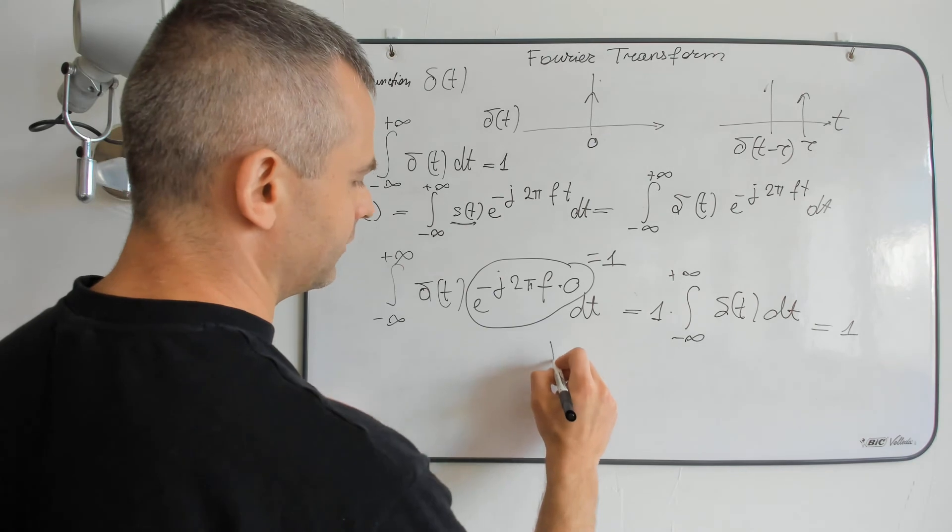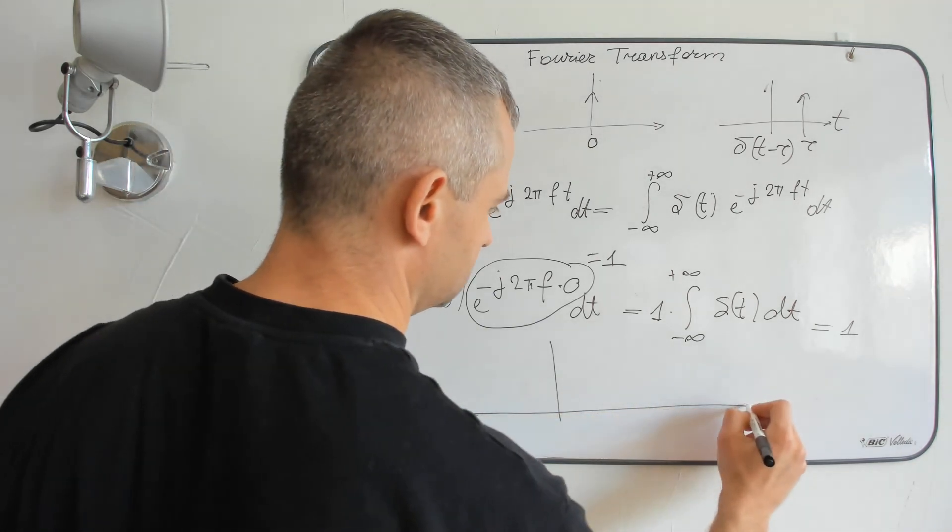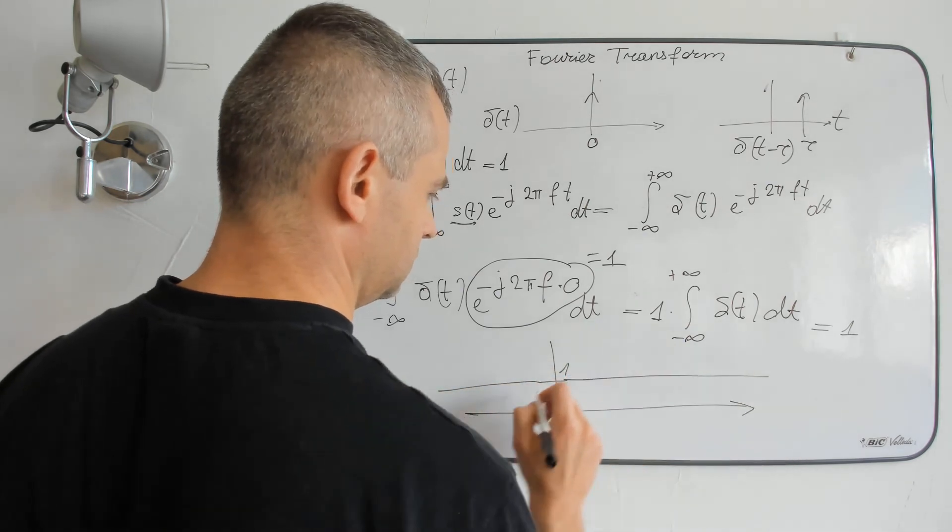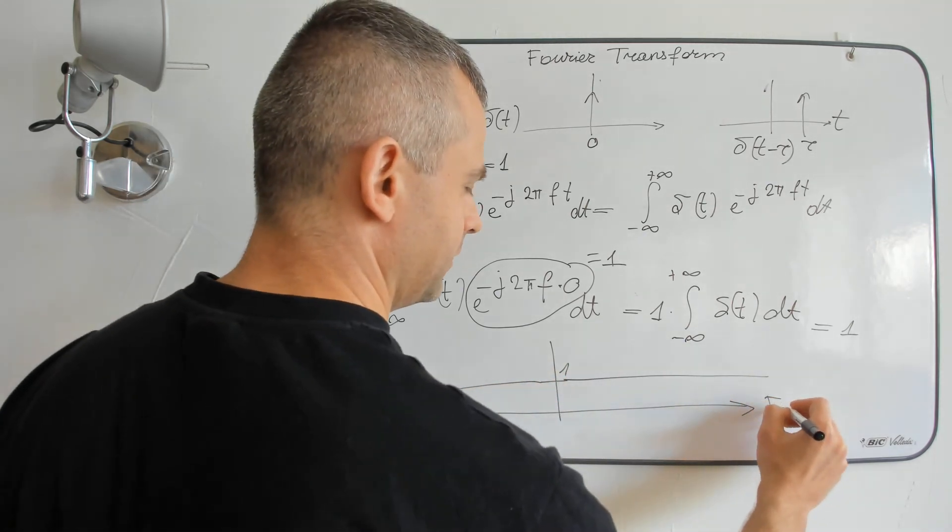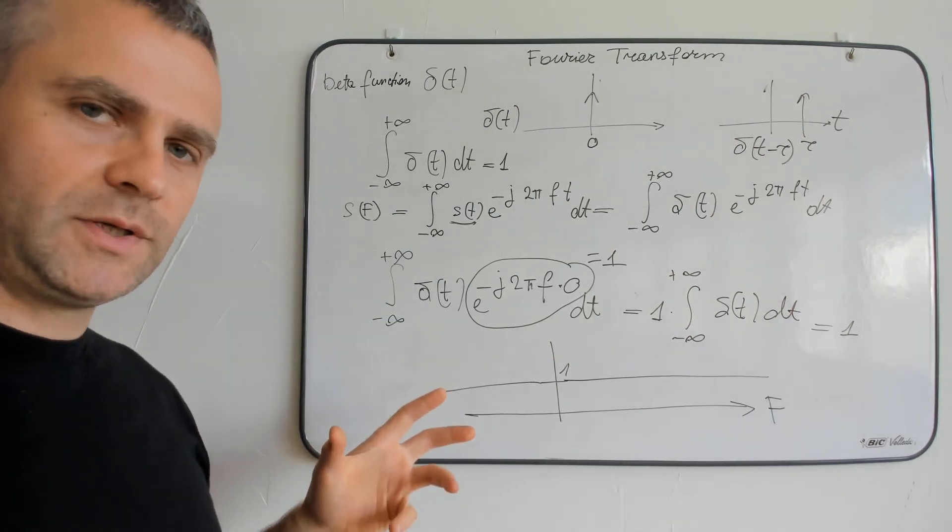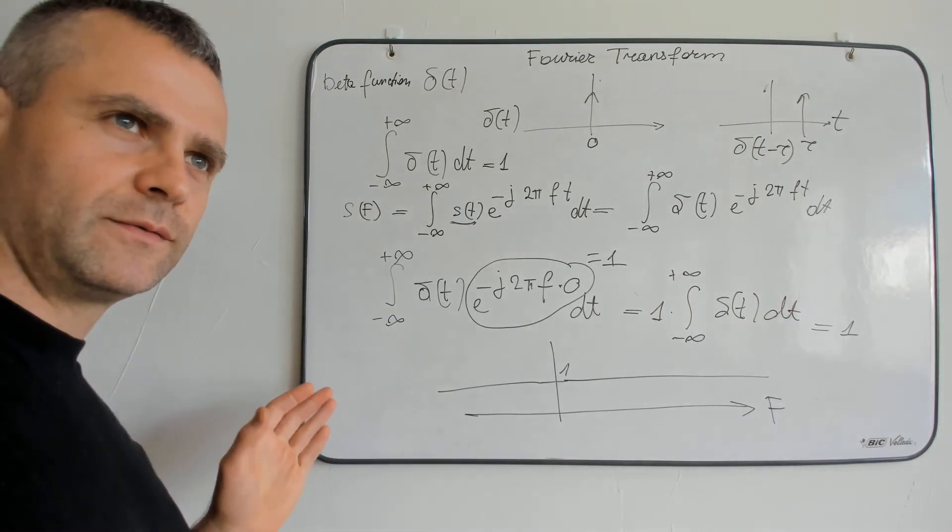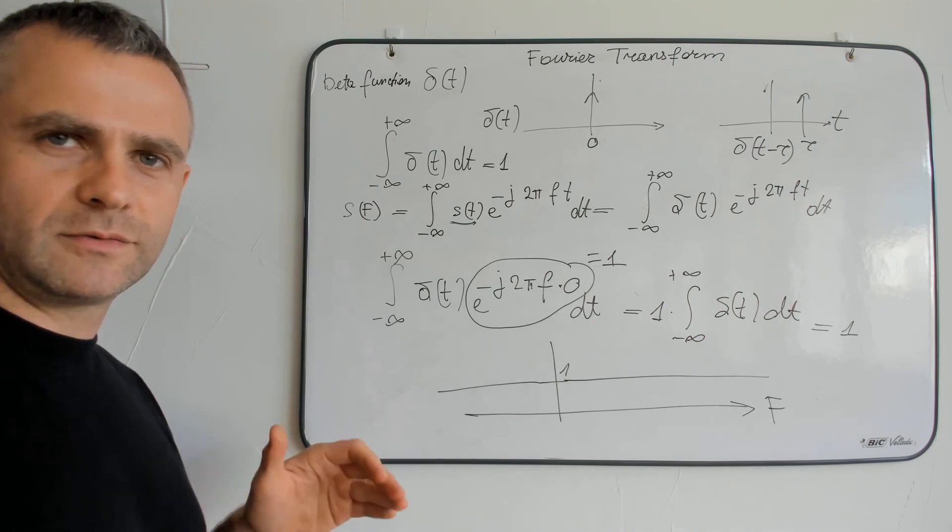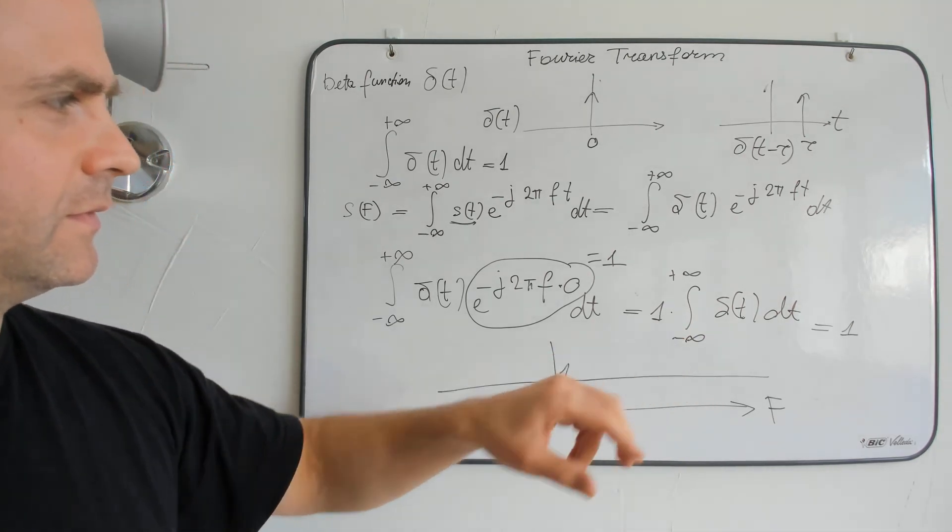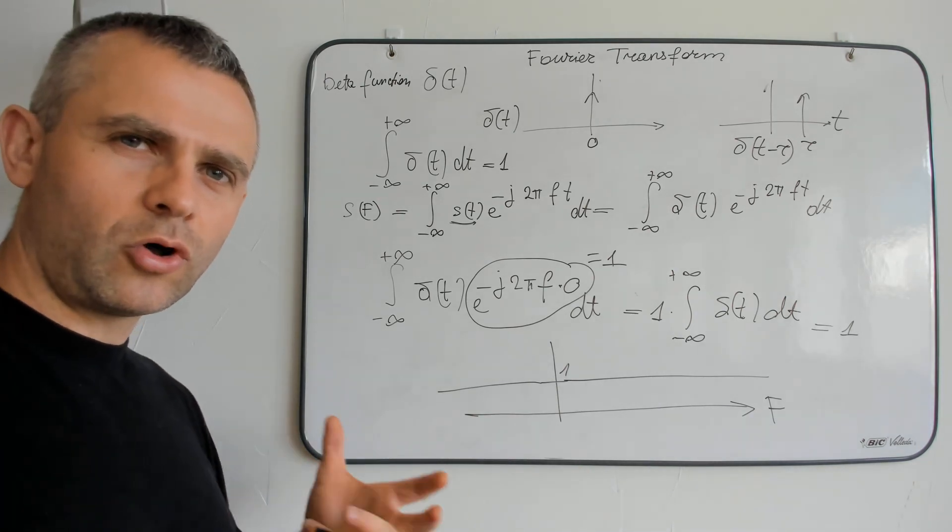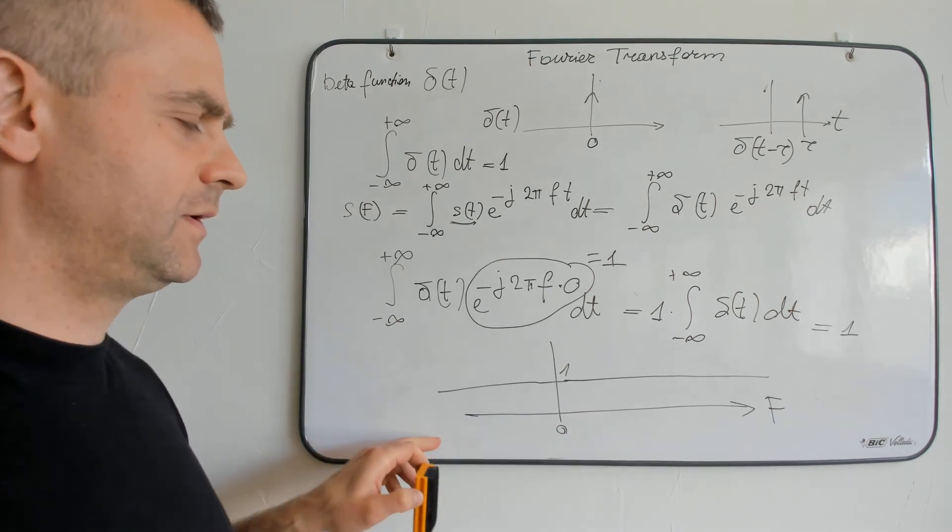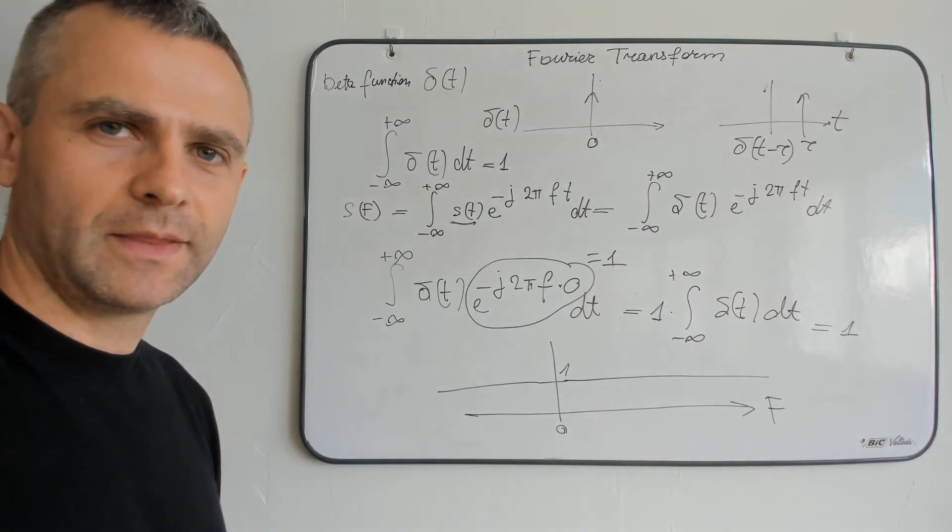So in frequency domain, remember, Fourier transform allows me to switch from the time domain to the frequency domain. So in frequency domain, delta function represents all frequencies from minus infinite to plus infinite.